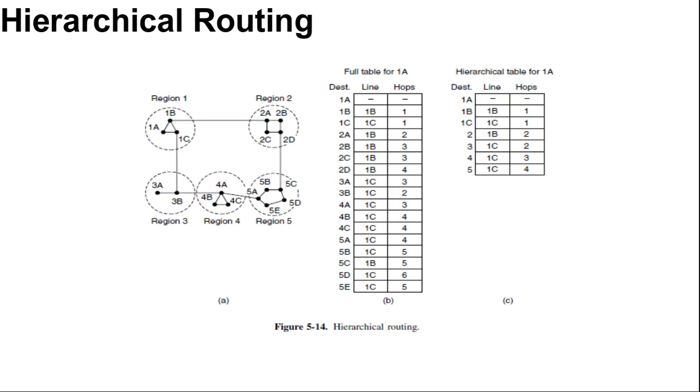The full routing table for router 1A has 17 entries. When hierarchical routing is done, there are entries for all the local routers, but all other regions are condensed into a single router. All traffic for region 2 goes via the 1B to 2A line. Hierarchical routing has reduced the table from 17 to 7 entries. As the ratio of the number of regions to the number of routers per region grows, the saving in table space increases.